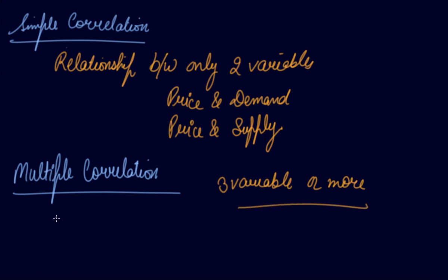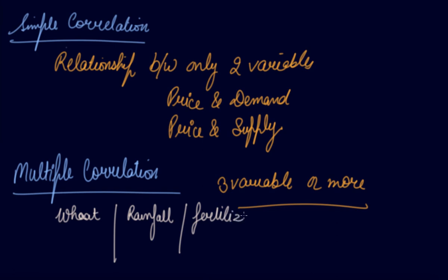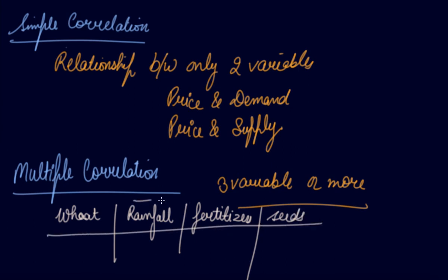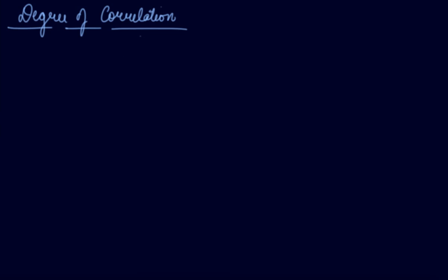For example, what is the effect on the production of wheat due to rainfall, fertilizers, and seeds? Here you are studying four variables — the relationship between wheat and all three other variables. In this case, it is your multiple correlation.